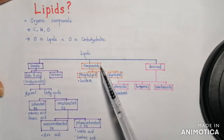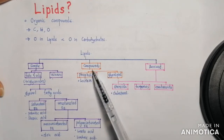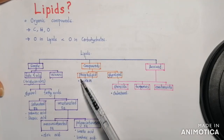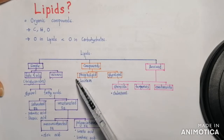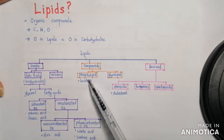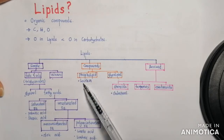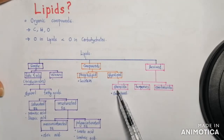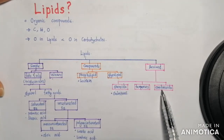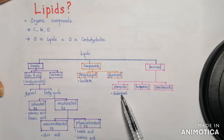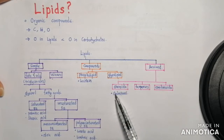Lipids are also categorized as compound lipids, which include phospholipids and glycolipids. In phospholipids, we'll be studying about lecithin. And in derived lipids, we have steroids, terpenes, and carotenoids. We'll study more on steroids, particularly cholesterol.